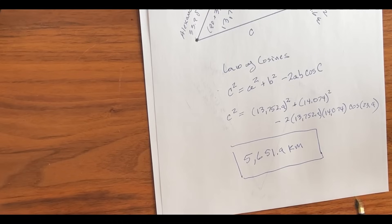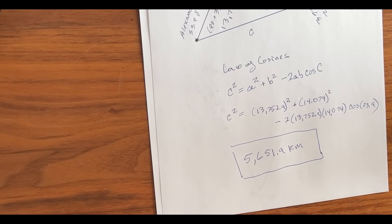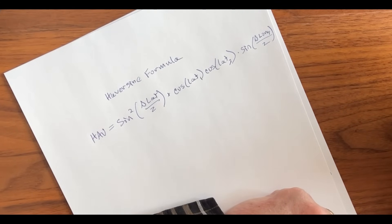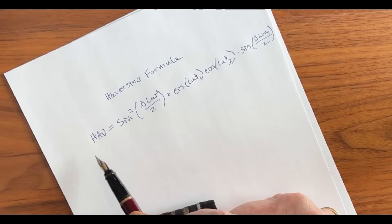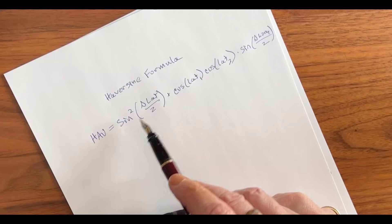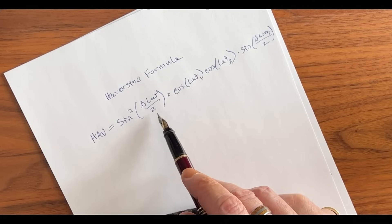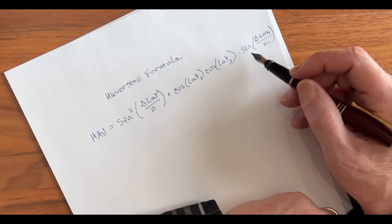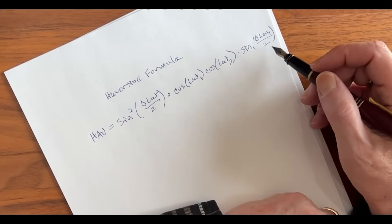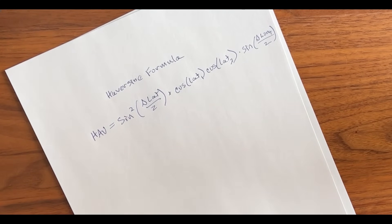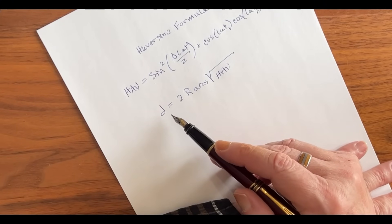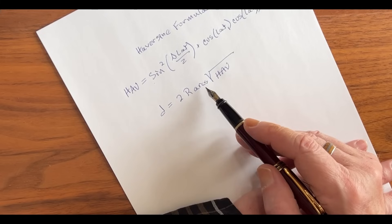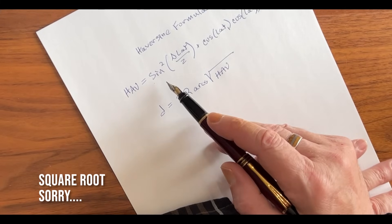On a spherical earth, we use something called the Haversine formula. If you thought the law of cosines was a mouthful, let's look at the Haversine formula. The Haversine of the distance between those two points is the sine² of the change in latitude over 2, plus the cosine of lat1 times the cosine of lat2 times the sine of the change of longitude over 2. Once you have the Haversine, we need to do a little more to it.